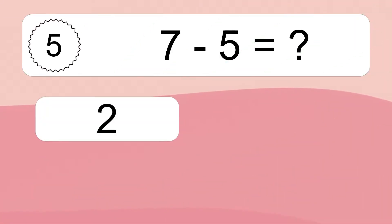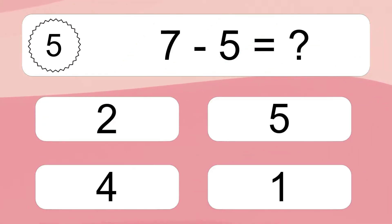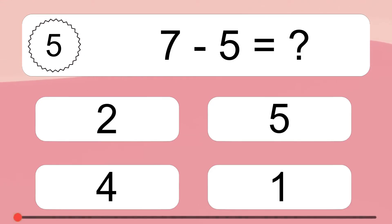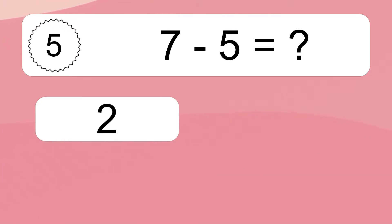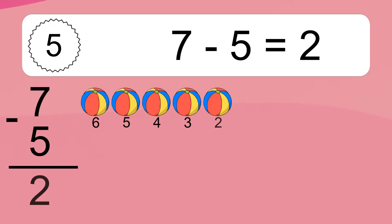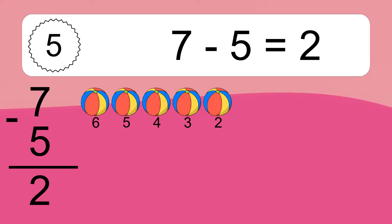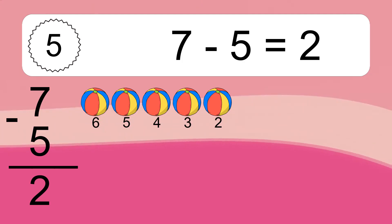7 minus 5 equals what? 7 minus 5 equals 2. Let's count it! 6, 5, 4, 3, 2.